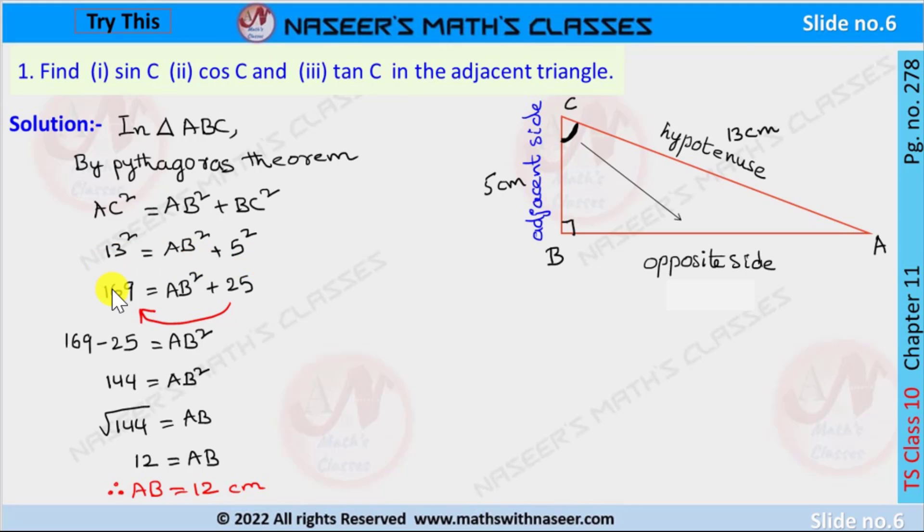13 squared means 169, 5 squared means 25. Now transpose 25 from RHS to LHS. It can be written as 169 minus 25 is equal to AB squared. 169 minus 25 is 144, then we get 144 is equal to AB squared.